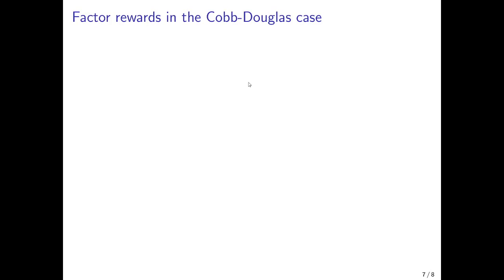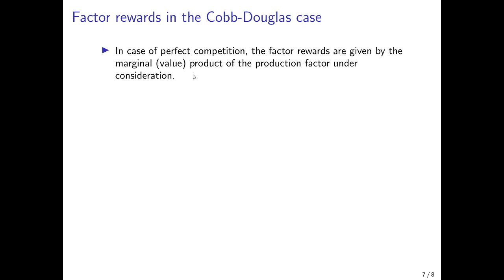Next, we examine the factor rewards in the Cobb-Douglas case. Factor rewards are the compensation for the production factors: the wage rate for labor and the capital rental rate for capital. The capital rental rate is typically the interest rate plus the rate of depreciation, because the costs of capital consist of payments to those who rent out their capital plus the depreciation of capital that wears out in production.